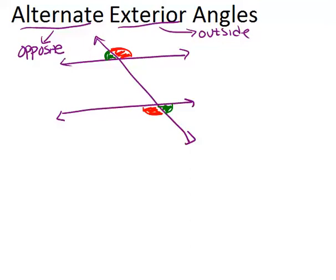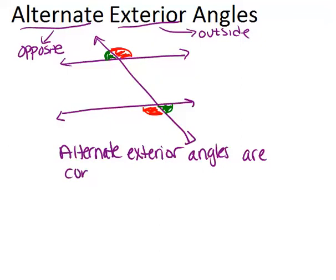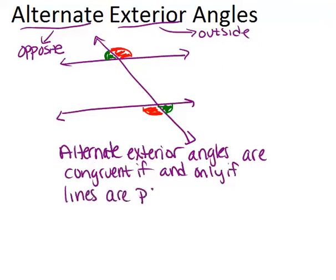Similar to alternate interior angles, alternate exterior angles will be congruent if the lines are parallel — and the other way around is also true: if the alternate exterior angles are congruent, then we can know the lines are parallel. We can write this as: alternate exterior angles are congruent if and only if lines are parallel. This is a biconditional statement, which has two conditional statements in it.